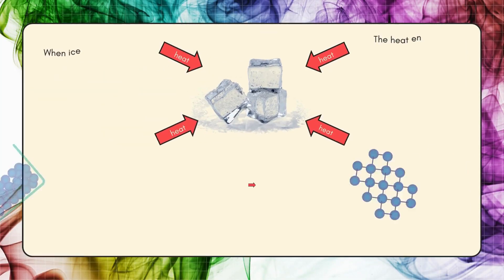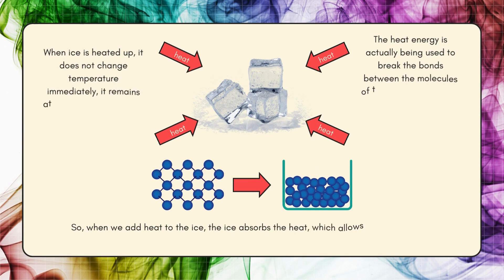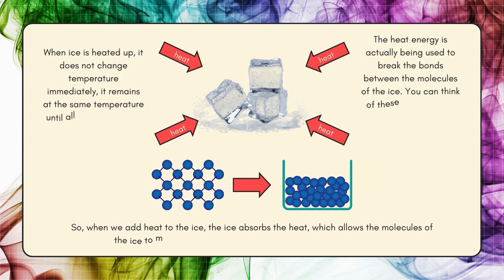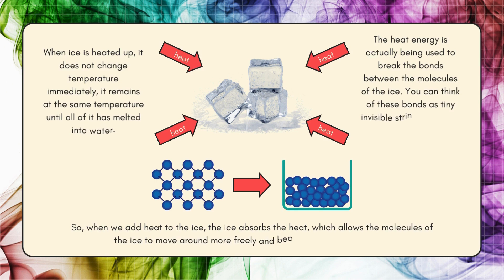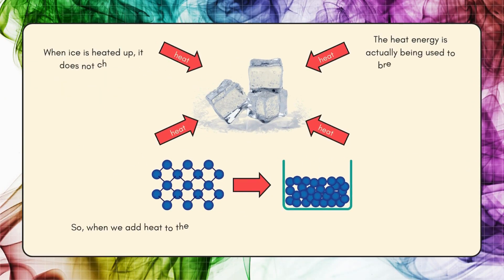When ice is heated up, it does not change temperature immediately — it remains at the same temperature until all of it has melted into water. The heat energy is actually being used to break the bonds between the molecules of the ice. You can think of these bonds as tiny invisible strings that hold the molecules of the ice together.